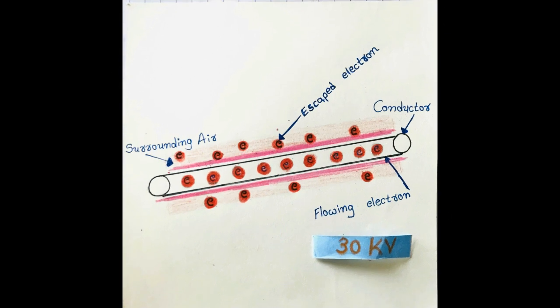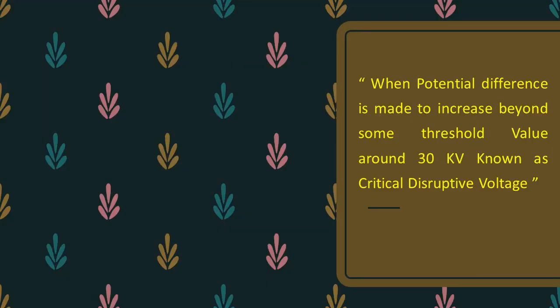But as value of voltage increases, the air is subjected to more dielectric strength. Some electrons escape from conductor to air and ionize it, but when potential difference is made to increase beyond some threshold value...